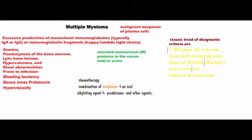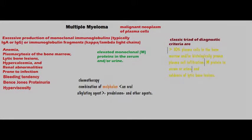As already discussed, the diagnostic criteria include more than 10% plasma cells in the bone marrow, elevated M protein in serum and urine, and evidence of lytic bone lesions — these three form the classic triad. The treatment is generally chemotherapy with a combination of melphalan and prednisolone, along with other chemotherapy regimens.